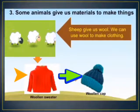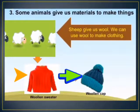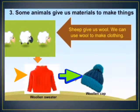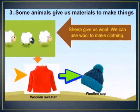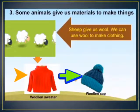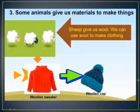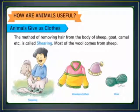Some animals give us materials to make things. Sheep give wool. We make woolen garments from wool. Here you can see a woolen sweater and woolen cap. The method of removing hair from the body of sheep, goat and camel is called shearing. Most of the wool comes from sheep.